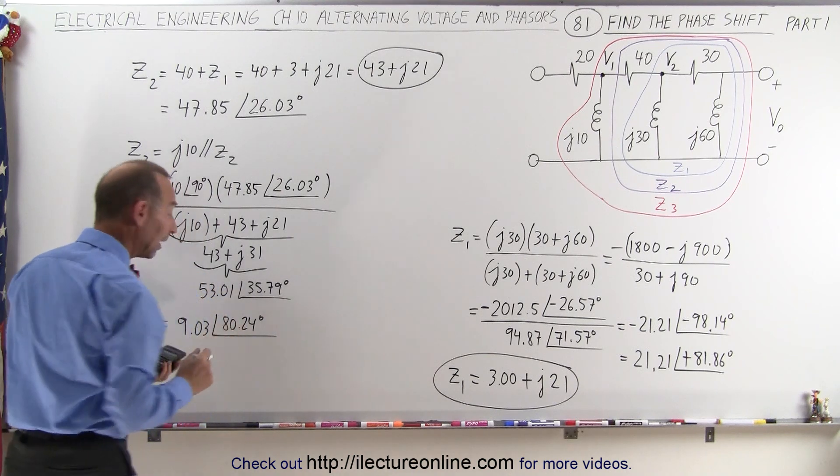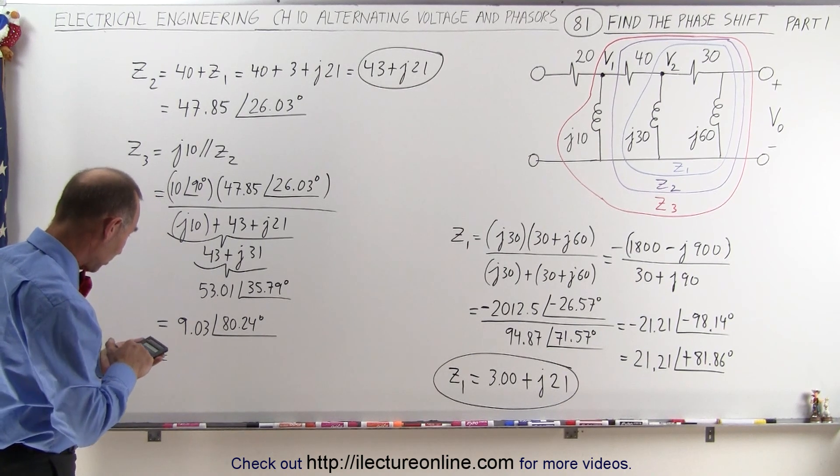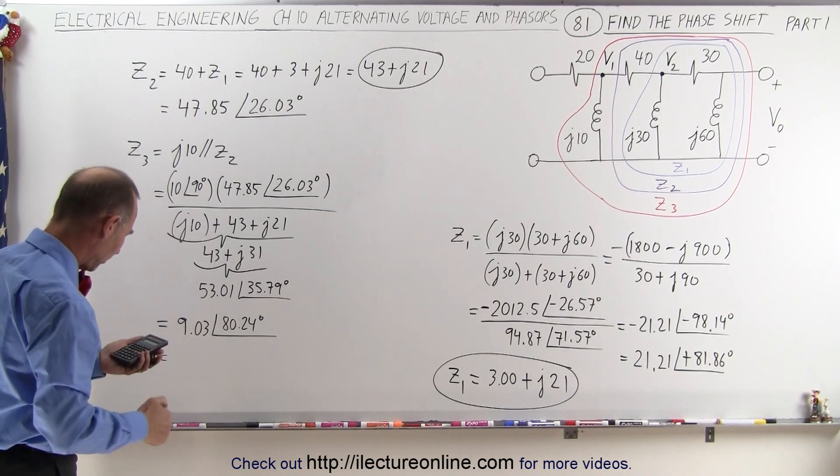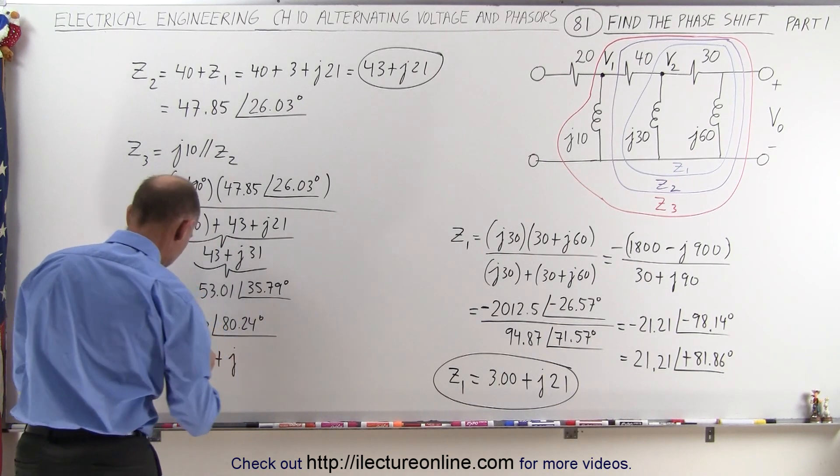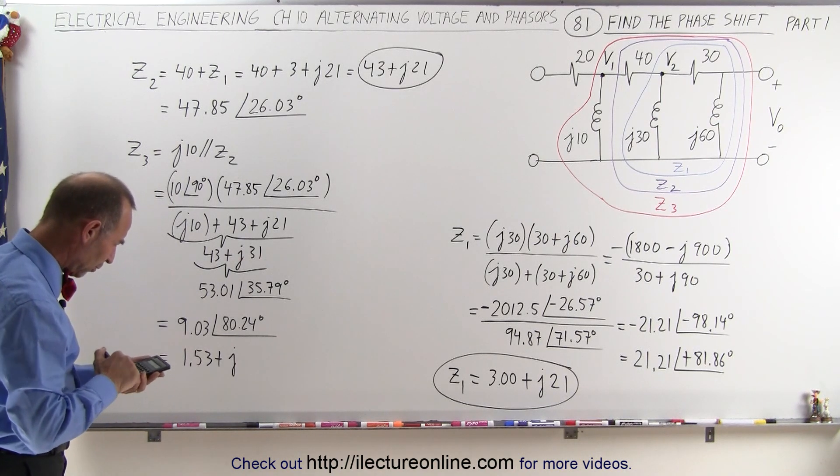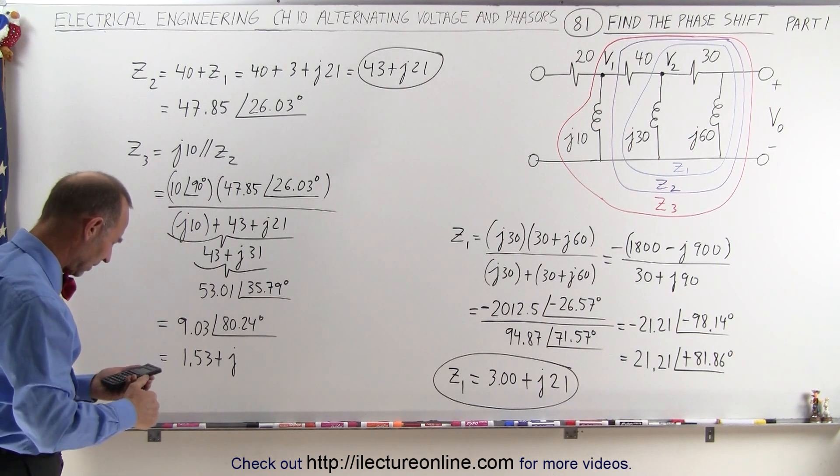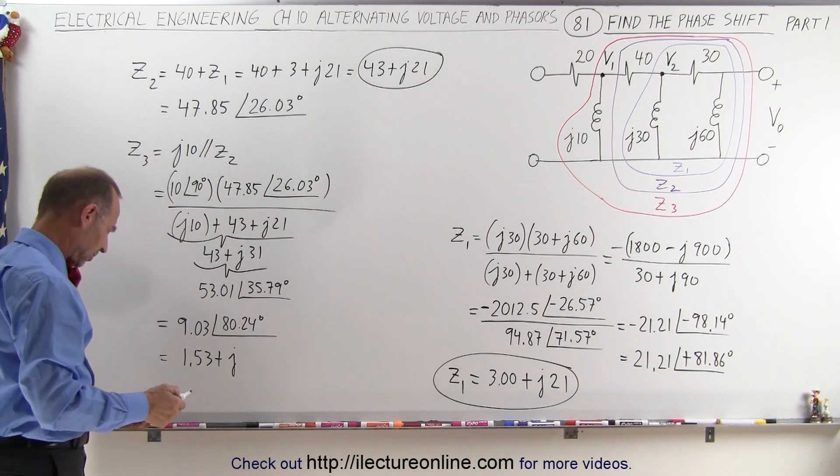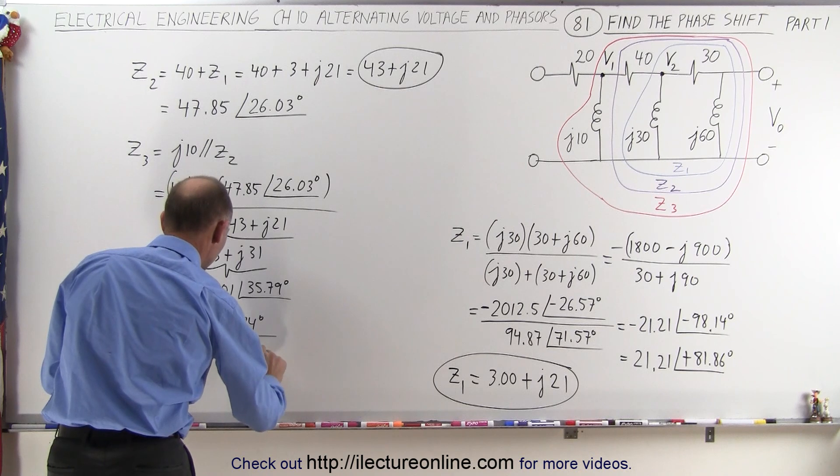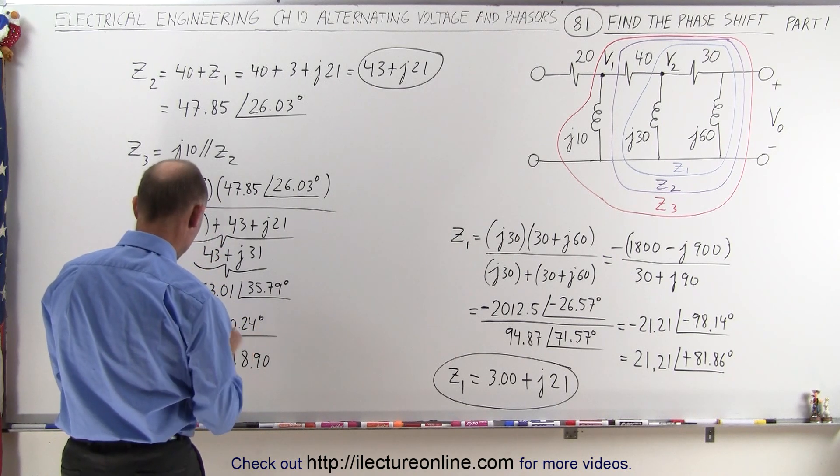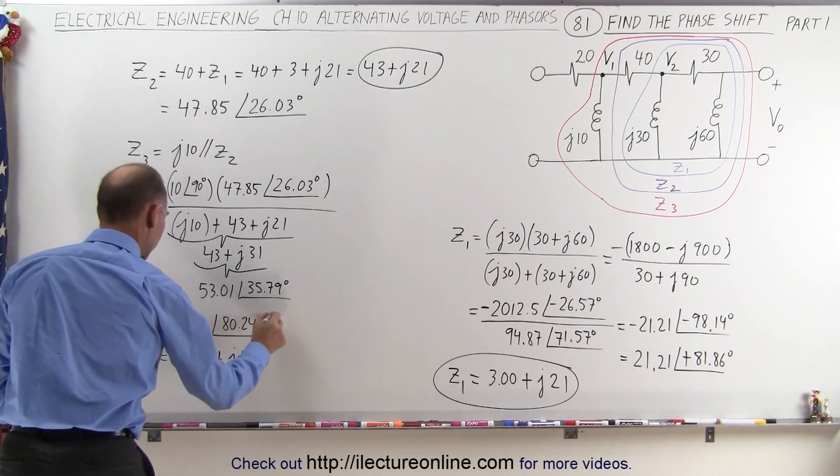And then if we want to convert that to real and imaginary parts, we take the cosine of that and multiply times 9.03, that gives us 1.53 plus J, take the sine of that and multiply times 9.03, that gives us 8.90. So this is Z3. It can be written in these two formats. We have Z1, which can be written like this or like this, and we have Z2 up here somewhere, which can be written like that or like this. So now we have all three impedances.